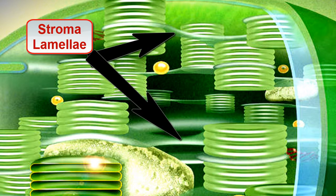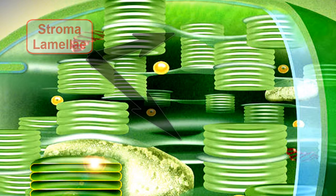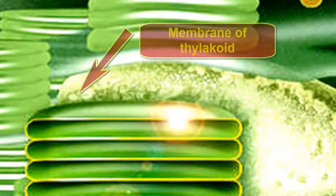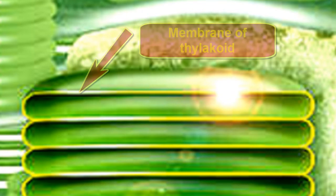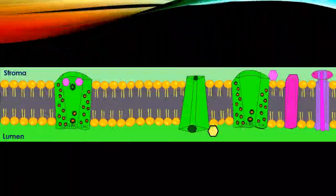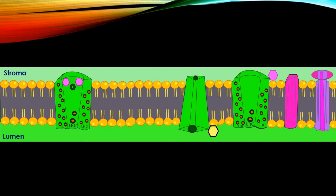The light-dependent reactions of photosynthesis take place within the thylakoid membranes. Let's take a closer look at the membranes of the thylakoid. The outside of the membrane is surrounded by stroma,